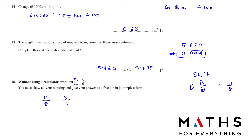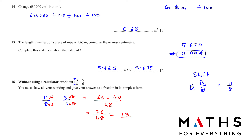Whenever you have fractions with plus or minus, you need a common denominator. Multiply 11/8 by 6/6 and multiply 5/6 by 8/8. Calculate each numerator separately: 11 times 6 equals 66, and 5 times 8 equals 40. The common denominator is 8 times 6 equals 48. Then 66 minus 40 equals 26, giving 26/48. Simplify in the calculator to get the final answer: 13/24.